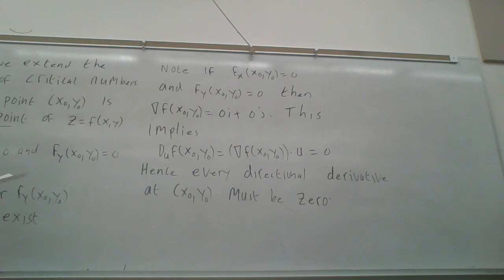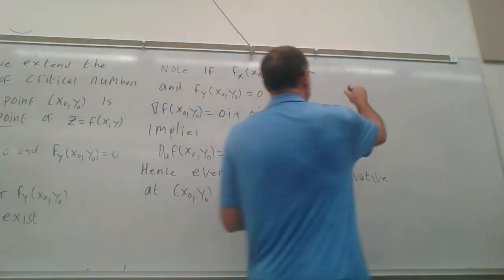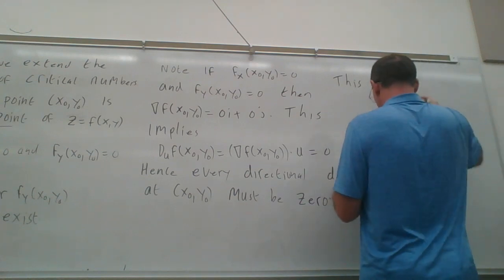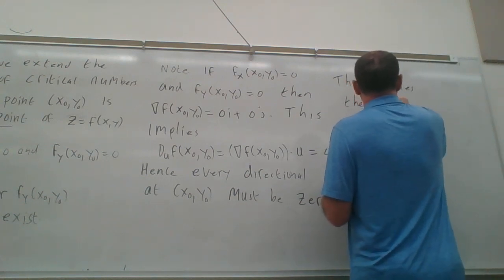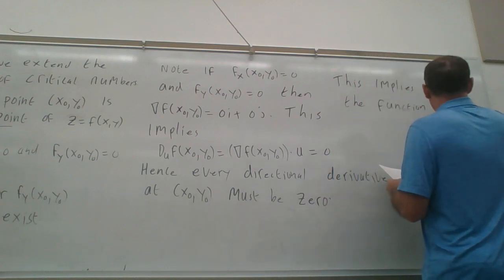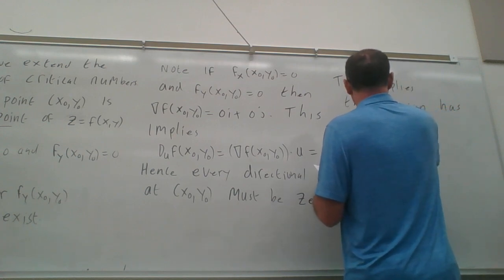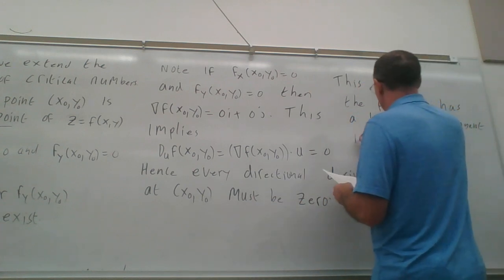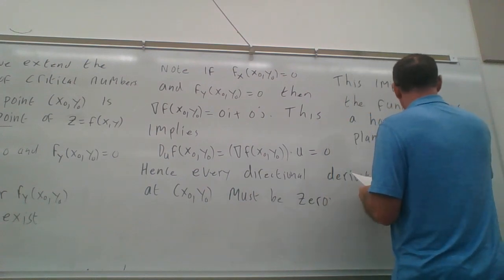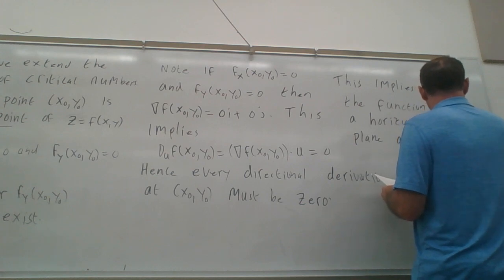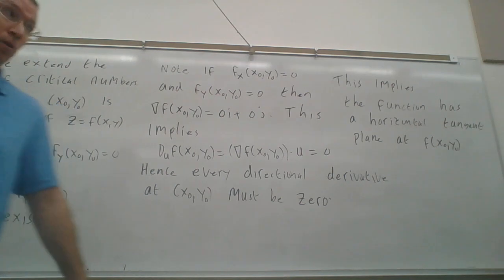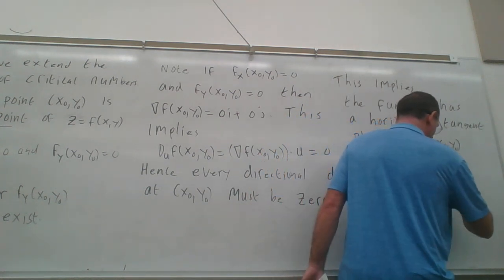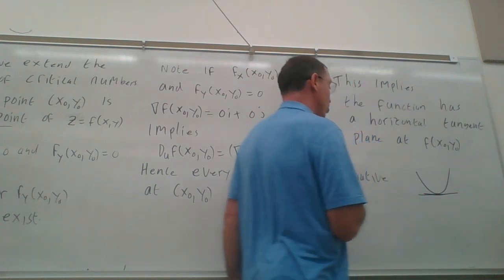This implies the function has a horizontal tangent plane at f(x₀, y₀). Recalling from Math 150, if a function has a relative min, the tangent line is horizontal. So this is just generalizing that idea to another dimension.